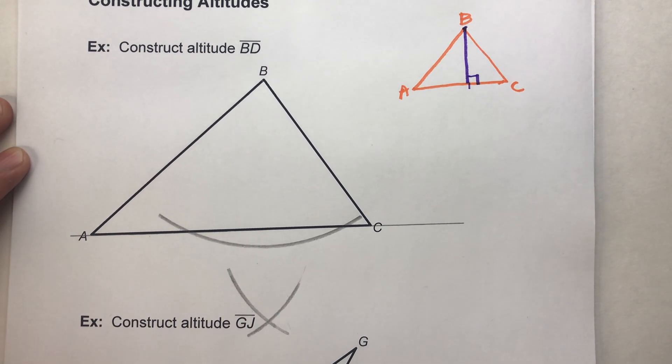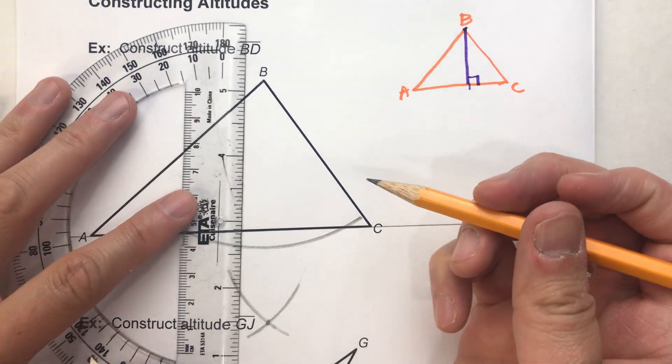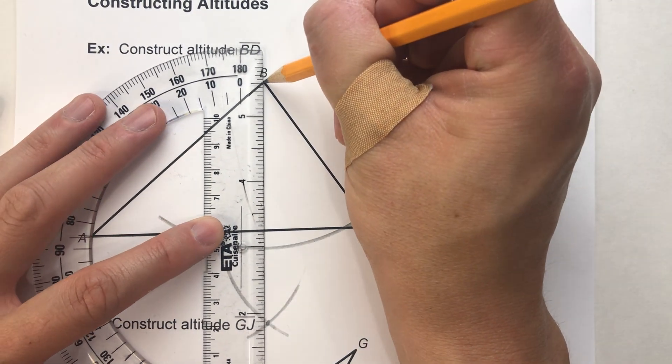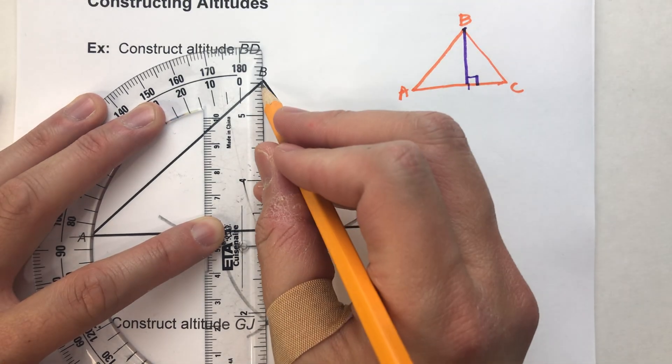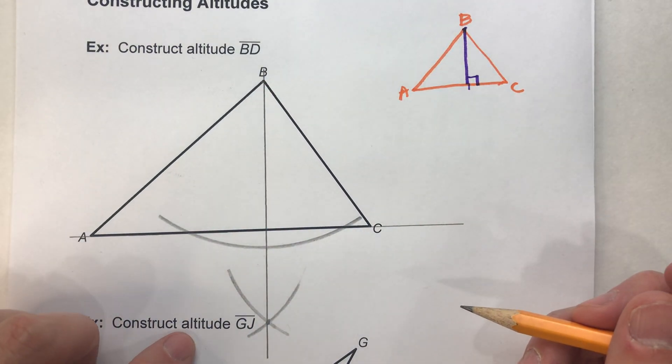So I've got my point right here that I'm going to draw my line through. So I'm going to go from B to that point right there. And I know this is perpendicular because I've basically constructed a perpendicular.